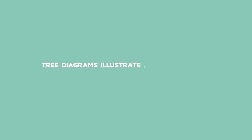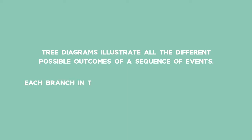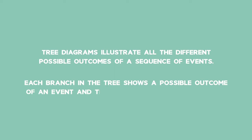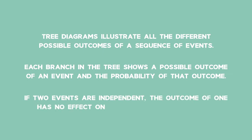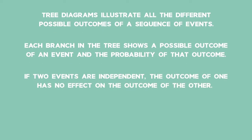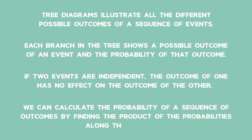Tree diagrams illustrate all the different possible outcomes of a sequence of events. Each branch in the tree shows a possible outcome of an event and the probability of that outcome. If two events are independent, the outcome of one has no effect on the outcome of the other. We can calculate the probability of a sequence of outcomes by finding the product of the probabilities along the branches.